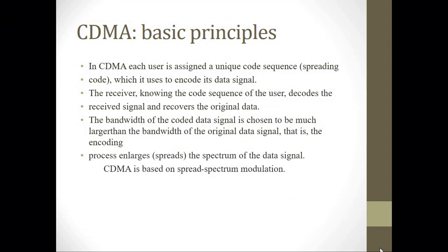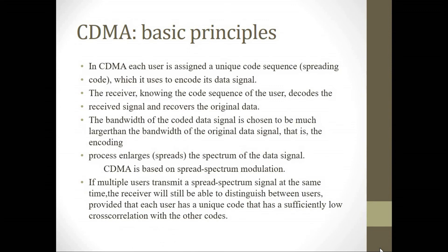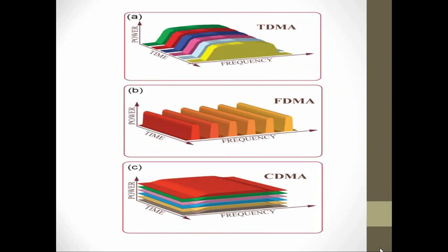The encoding process spreads the spectrum of the digital data signal, so CDMA is based on spread spectrum modulation. When multiple users transmit spread spectrum signals at the same time, the receiver can still distinguish between users, provided each user has a unique code with a sufficiently low cross-correlation with other codes. Here we also see the graphical representation comparing TDMA, FDMA, and CDMA.